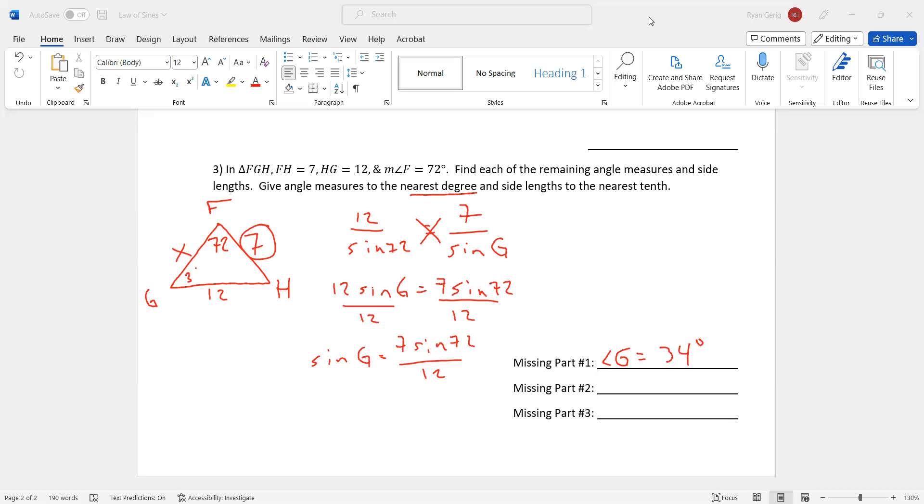Well, if this is 34 degrees, I should be able to find angle H pretty easily. That's missing part number 2. I have two angles. I can find the third. 180 minus 34 minus 72. And you get 74 degrees.